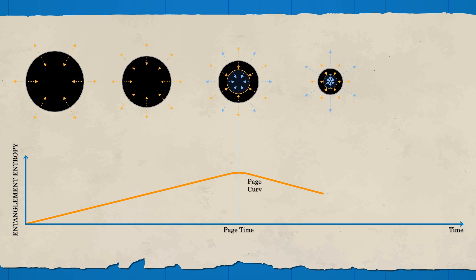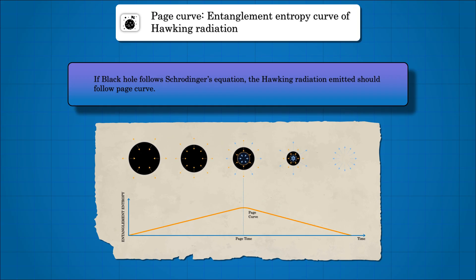Obtaining a Page curve using your favorite theory of quantum gravity is the holy grail of the black hole information paradox.